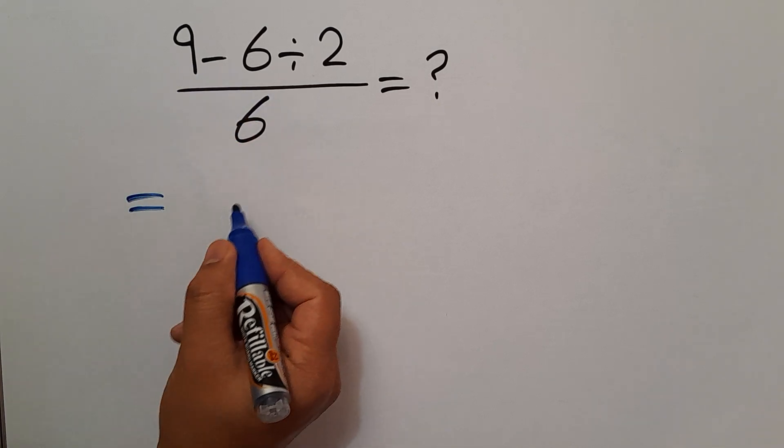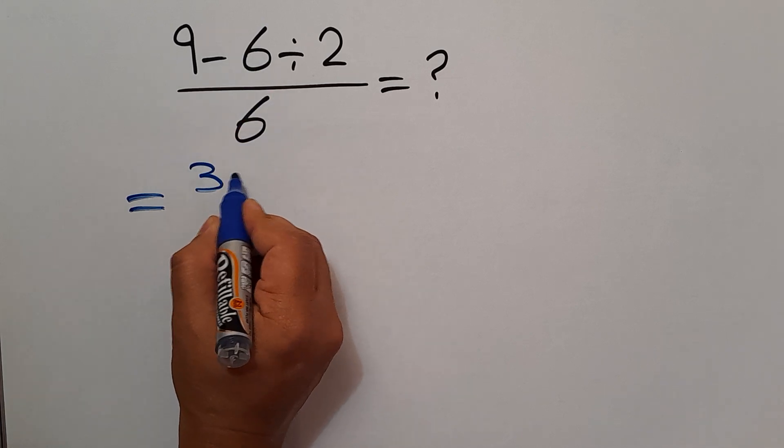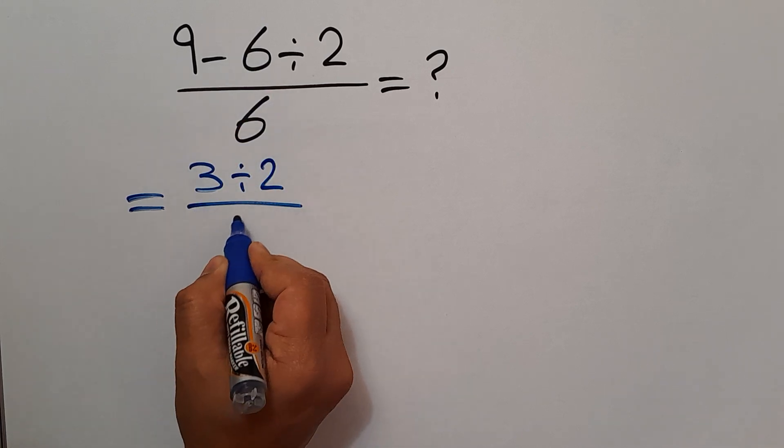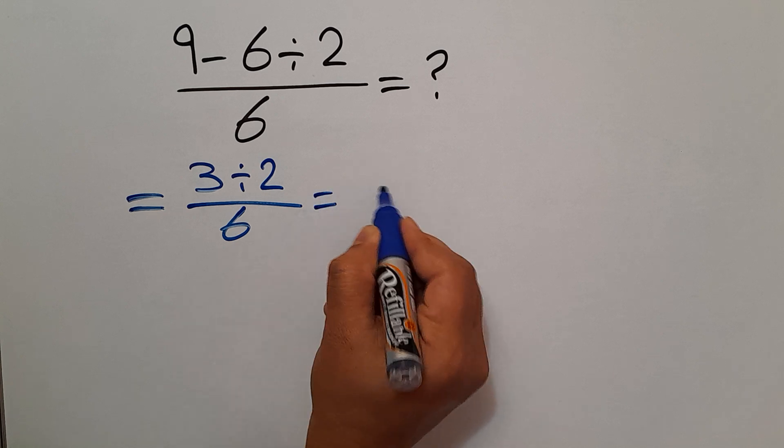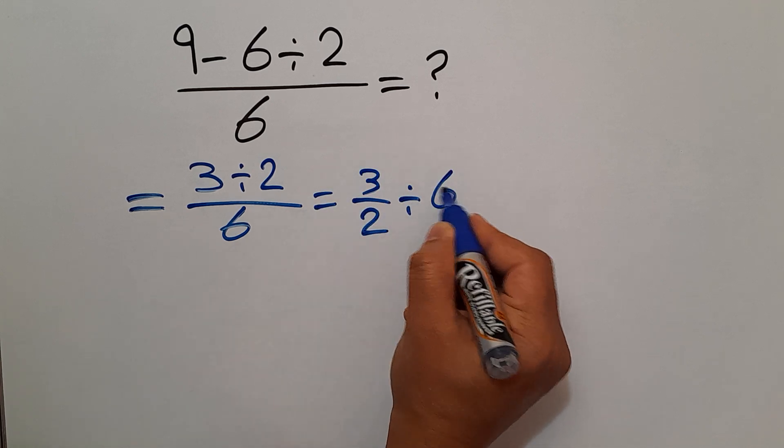Our fraction equals 9 minus 6 gives us 3 and 3 divided by 2 over 6. We can write 3 over 2 then divided by 6.